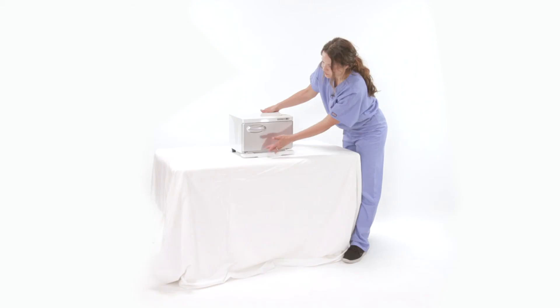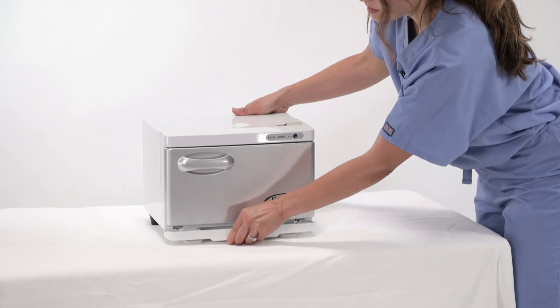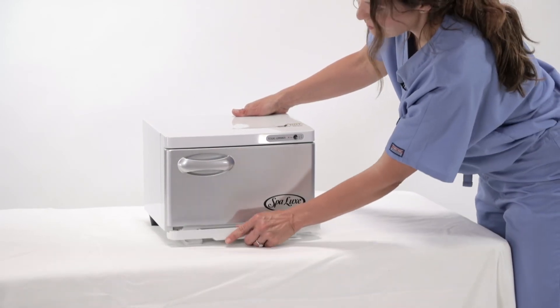This is the drip tray. This is where all the excess water would go. You can easily remove this, empty it out, and then you just place it back in.